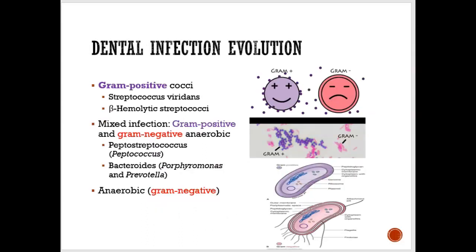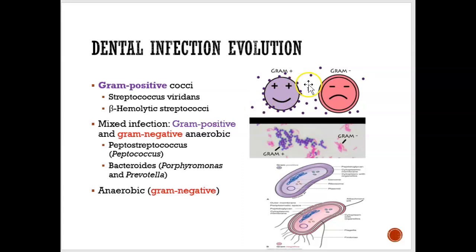Let's look at gram positive and gram negative bacteria before we get more into antibiotics. I'm sure you've heard of this before in your previous courses, but just to recap: gram positive is bacteria that's not so bad — some people say they're actually good bacteria. Gram negative is bad bacteria. When you take a sample to the lab and put a drop of dye, if it turns purple it's gram positive, and if it turns red it's gram negative bacteria.